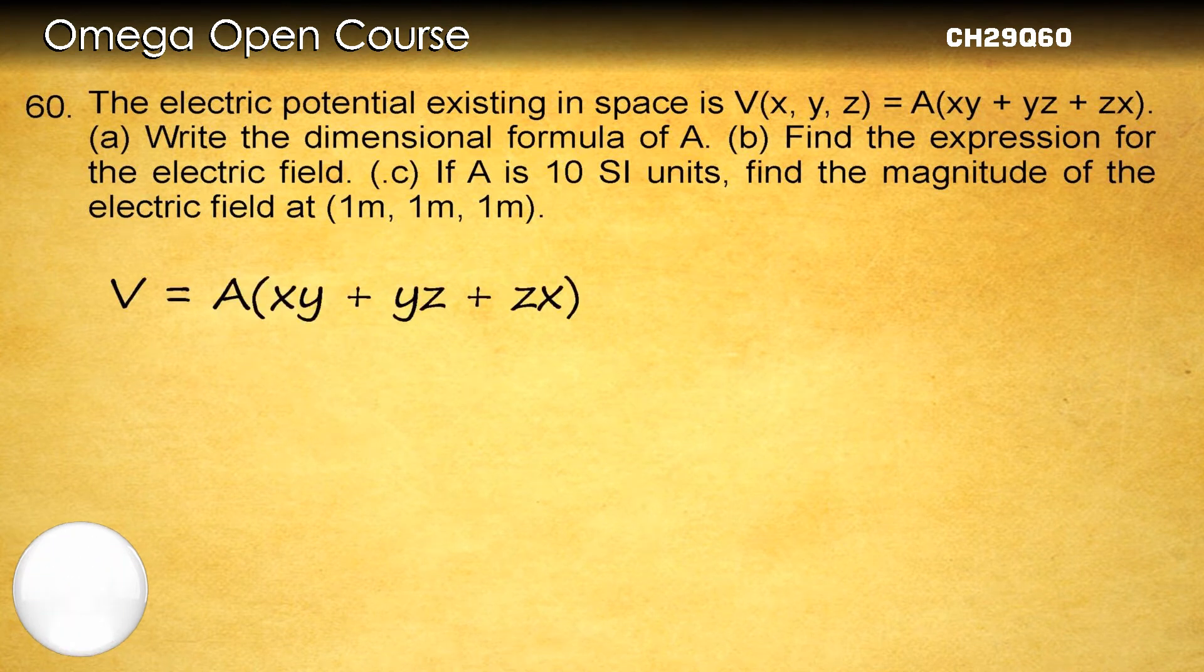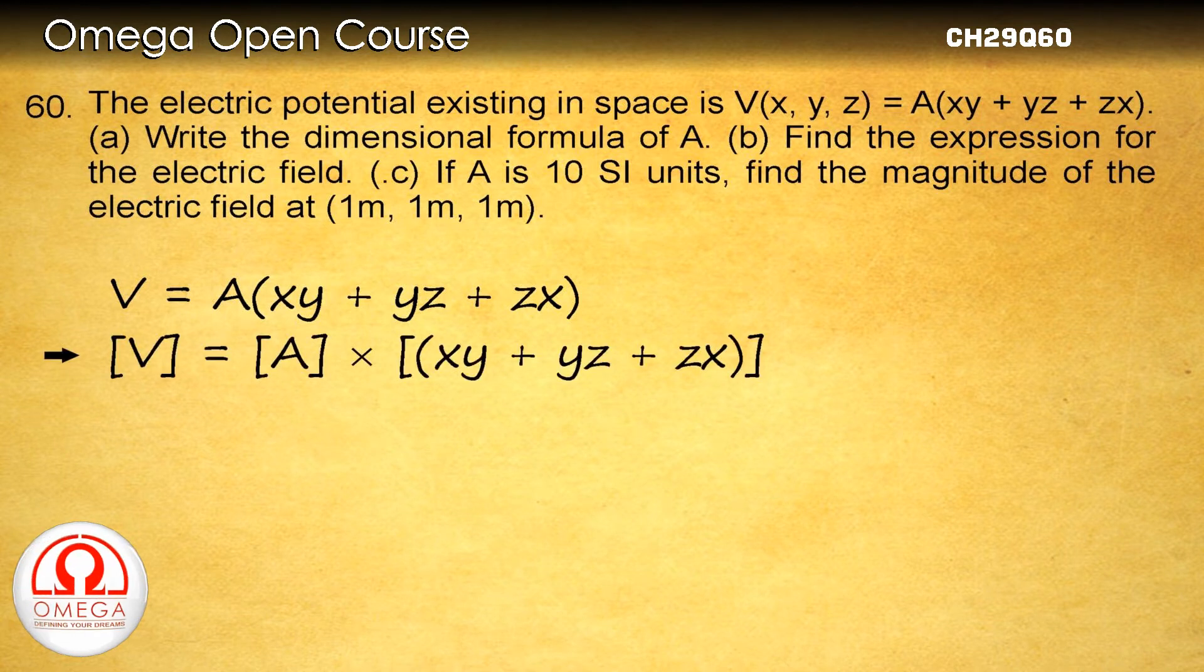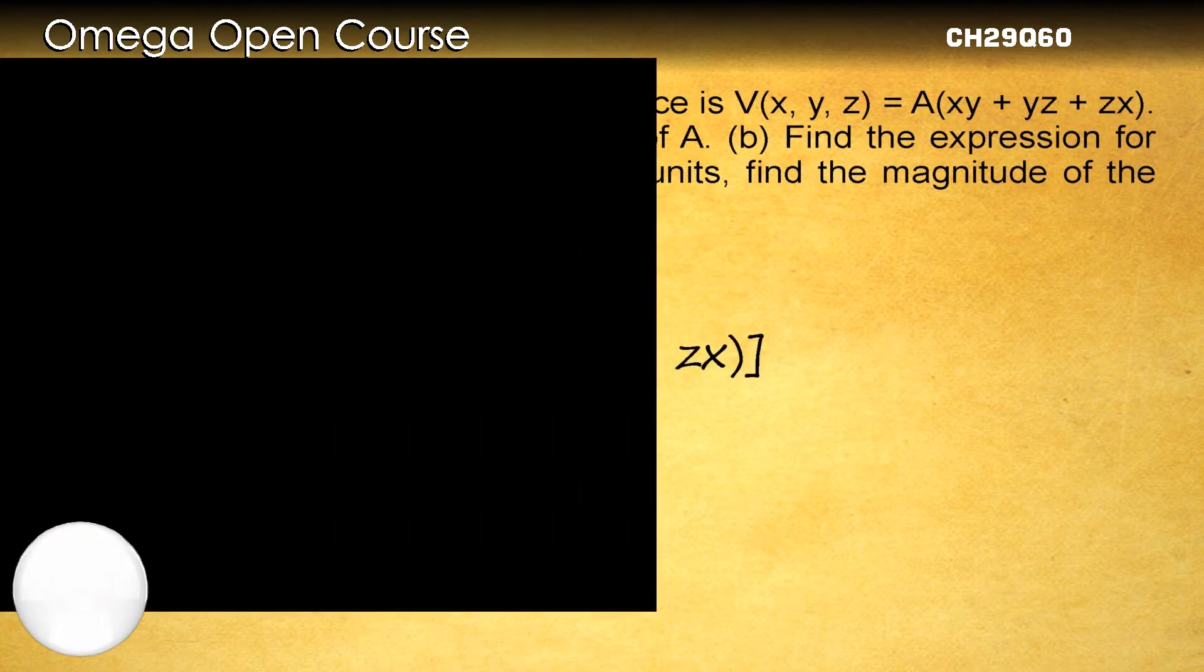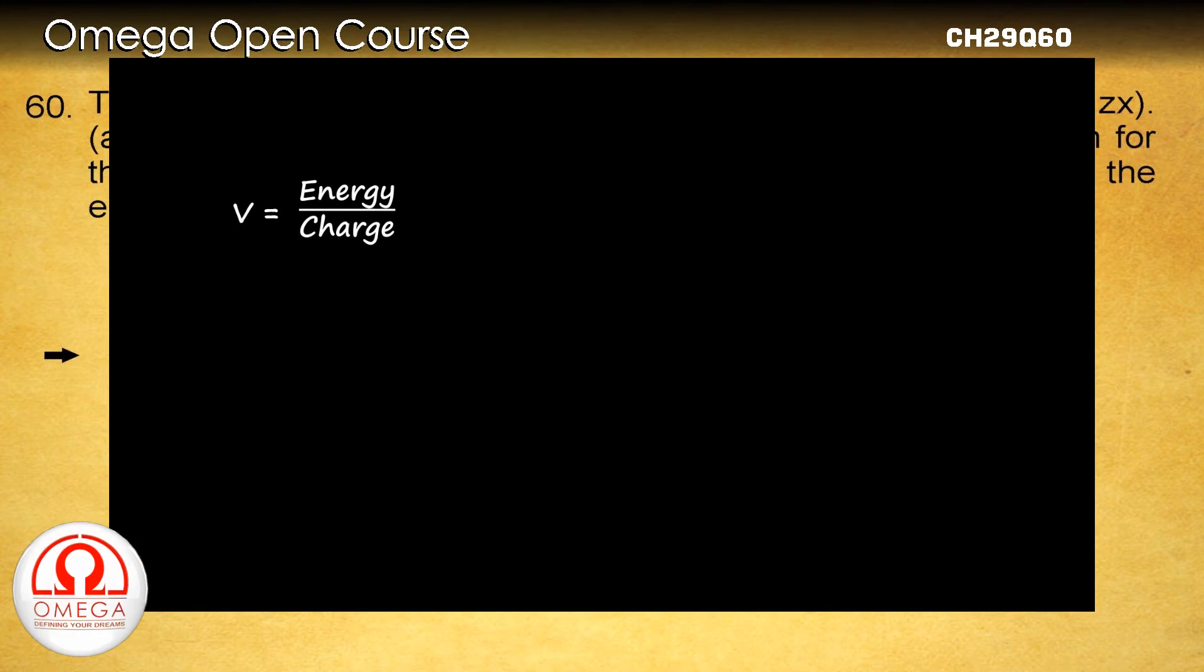Since V equals A(xy plus yz plus zx), therefore the dimension of V must equal the dimension of A(xy plus yz plus zx). Since V is potential energy per unit charge, its dimension is dimension of energy divided by dimension of charge.